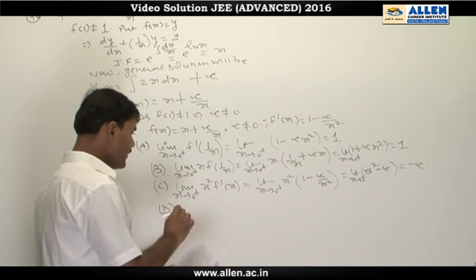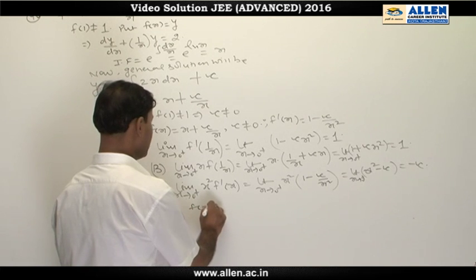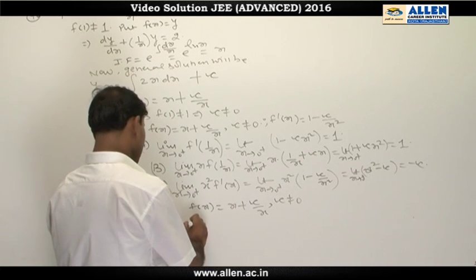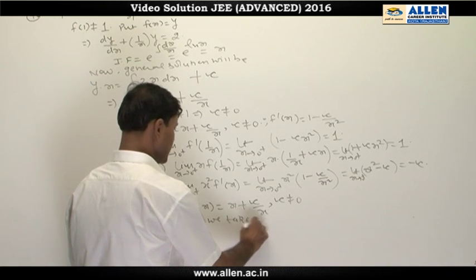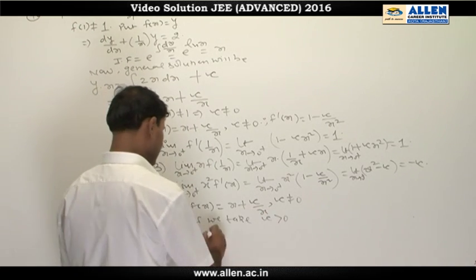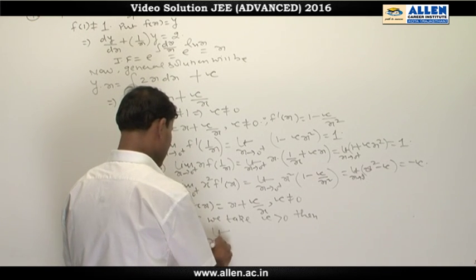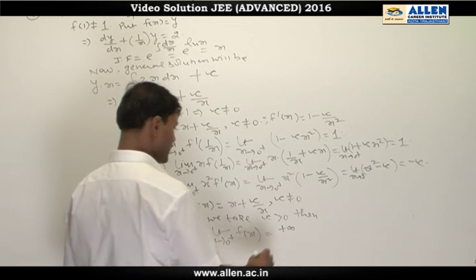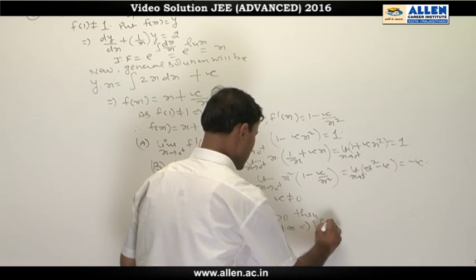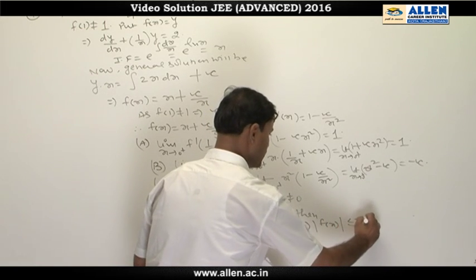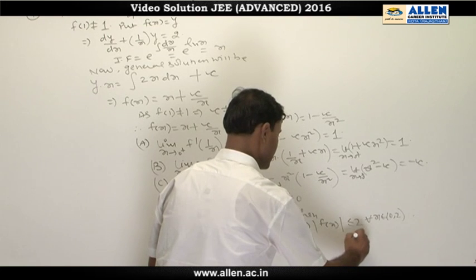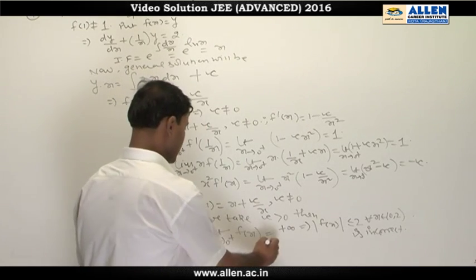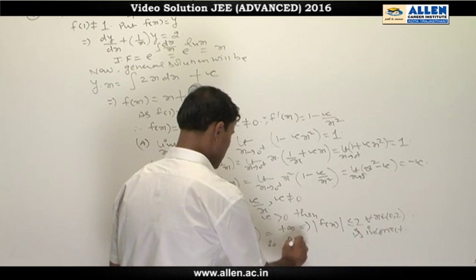Now coming to option D, we have f(x) = x + c/x where c ≠ 0. If we take c as some positive real number, then the limit as x → 0+ of f(x) will be +∞. From this we can see that |f(x)| ≤ 1 for all x in (0, 2) is incorrect. Therefore the correct answer for this question is only option A.